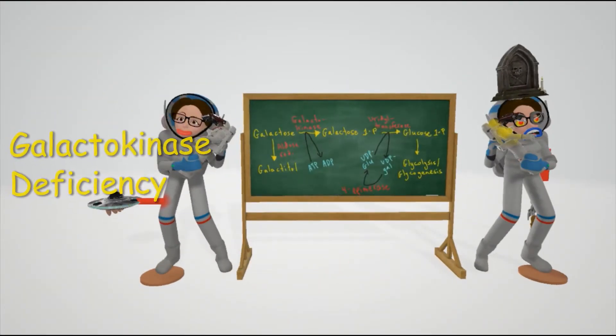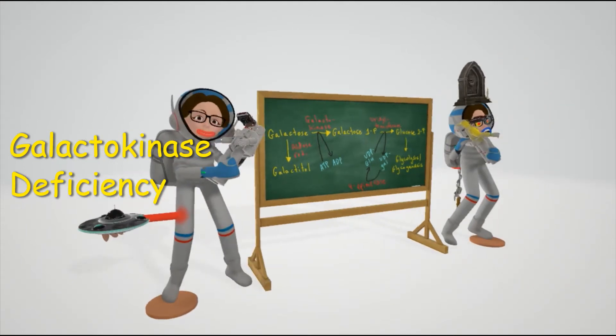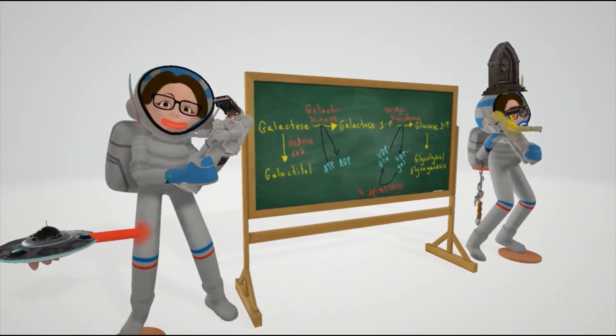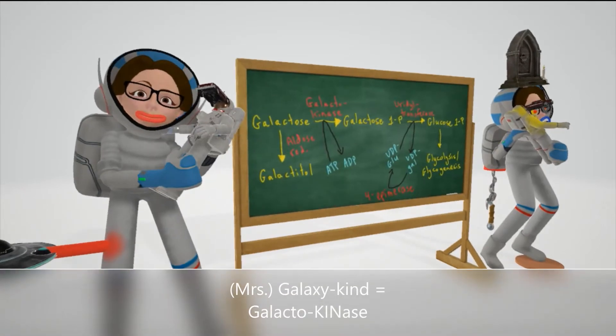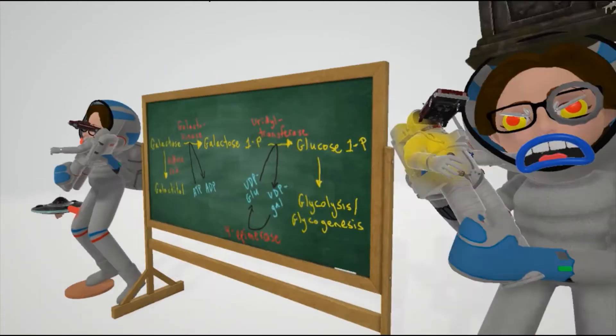In this video, we're going to talk about galactokinase deficiency, represented by this teacher on this side. This is the Galaxy teacher who's very kind - Galaxy Kind for galactokinase - as opposed to the teacher on the other side of the room.